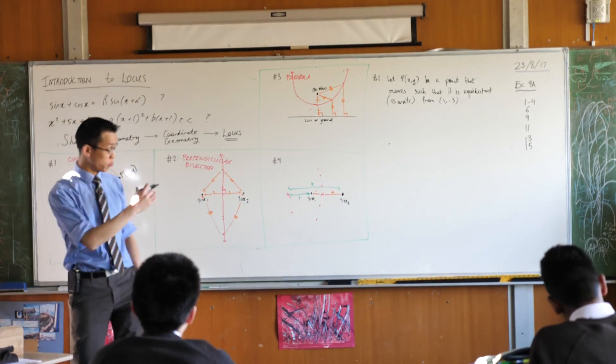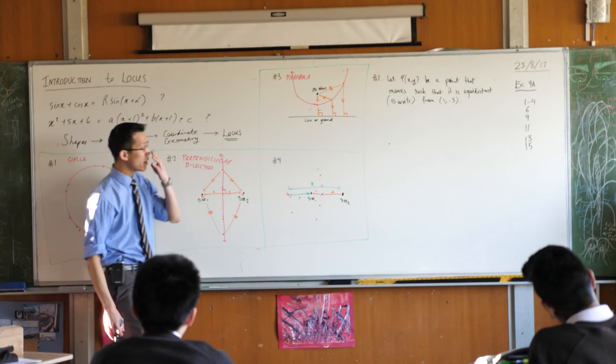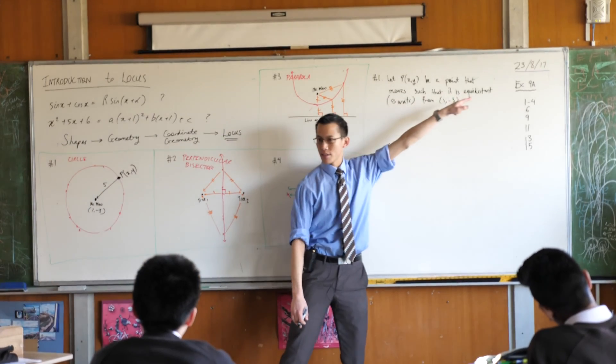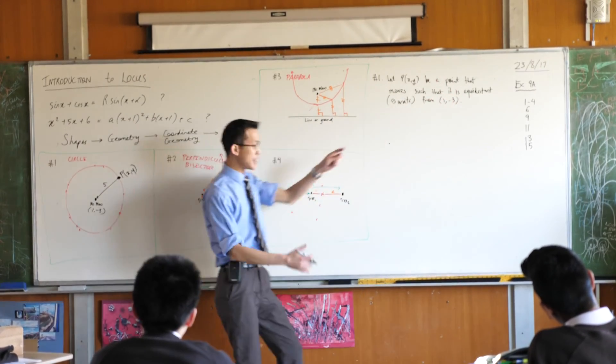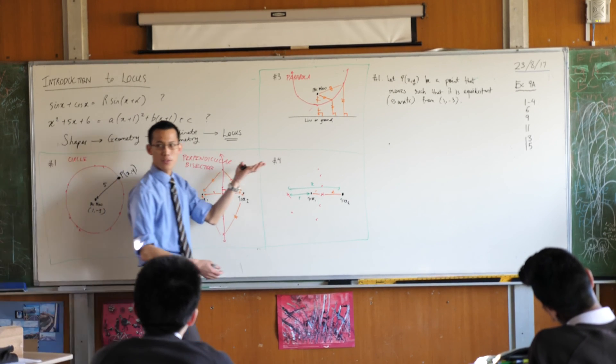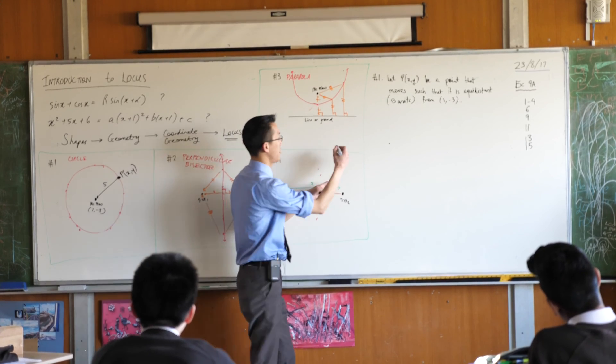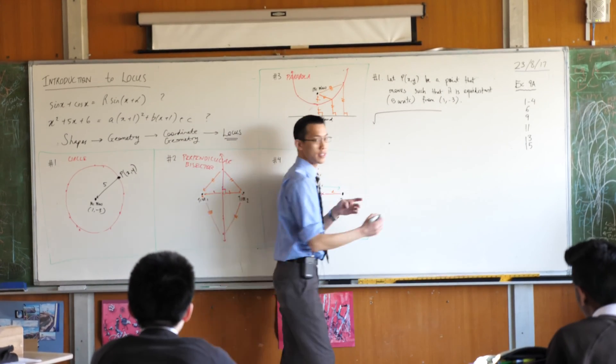So from here, from this wordy statement here, I can write an equation, right? It's about a distance, and when I'm thinking in terms of coordinate geometry, I have a formula for distance, right? What's the formula for distance? What's it start with? A big square root sign? This is the distance formula.